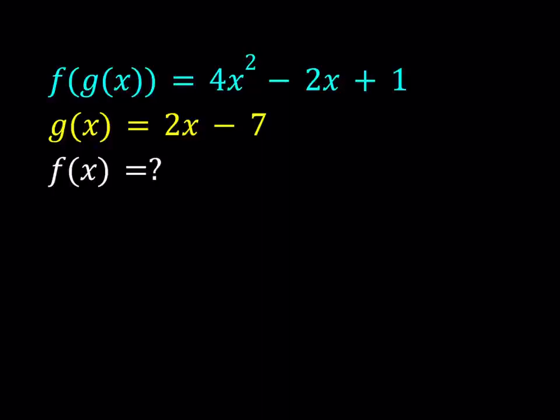Hello everyone. In this video we're going to be solving a functional system. We have the composition of f and g: f of g of x equals 4x squared minus 2x plus 1, and g of x is equal to 2x minus 7. And we're going to be solving for f of x.